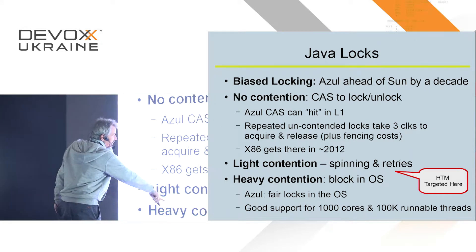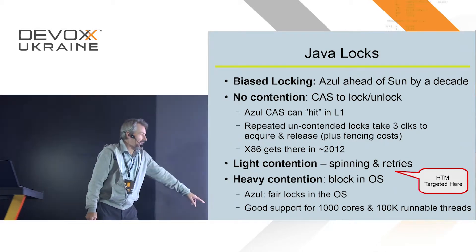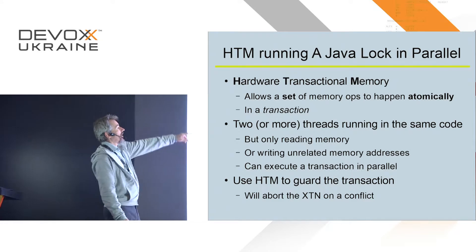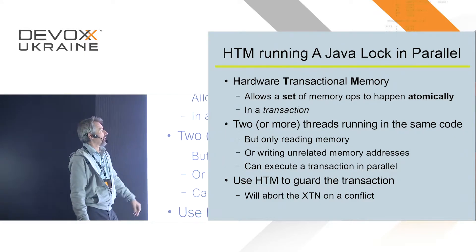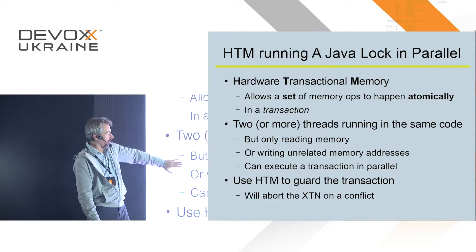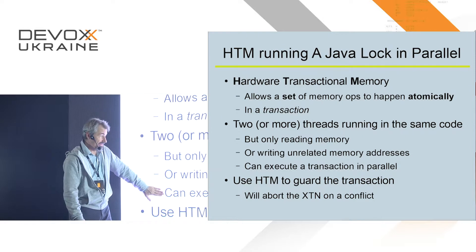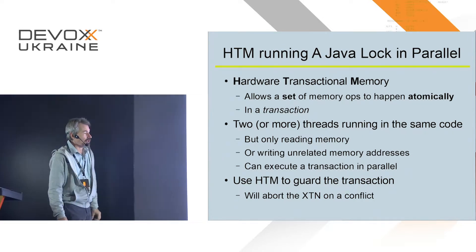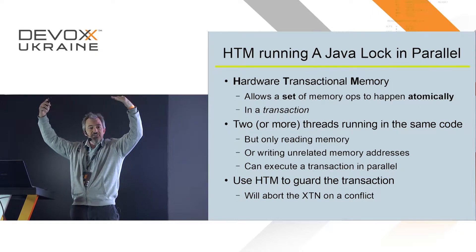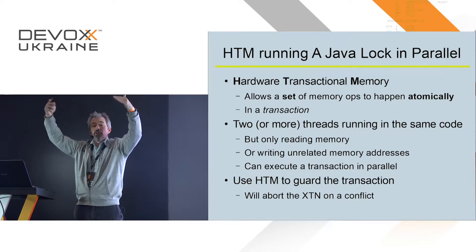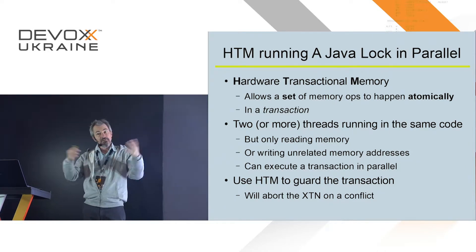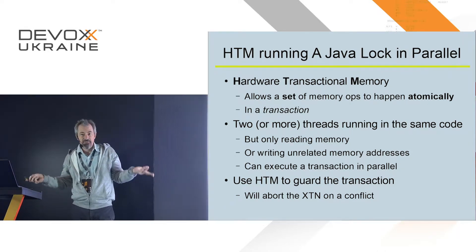The hardware transactional memory is targeted here: you're past the spinning, it didn't work, but you don't want to block in the OS yet — try the HTM. Hardware transactional memory runs a Java lock in parallel. You let a set of memory operations happen atomically — that's what 'transaction' means. Two or more threads run in the same code, either only reading or writing to unrelated parts from what the readers are reading. You let that happen at the same time, use the HTM to guard it, and abort if there's actually a conflict — but you can detect correctness. They both come to the lock, both say 'I'm taking this lock at the same time,' and both walk through it in parallel. At the end you say 'no one else saw what I did, so it was atomic.'